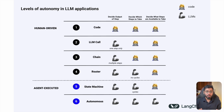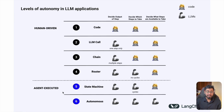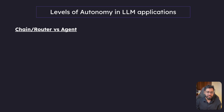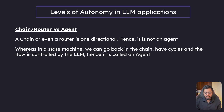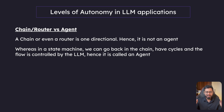Notice that in the diagram, the first four levels are labeled 'human driven,' while levels five and six are 'agent executed.' A chain or router is just one-directional — hence it is not an agent. In a state machine, we can go back in the chain, have cycles, and the flow is controlled by the LLM — hence it is called an agent. In chains and routers, the flow starts from the left and goes to the right until the end node is reached, with no real intelligence in the control flow.